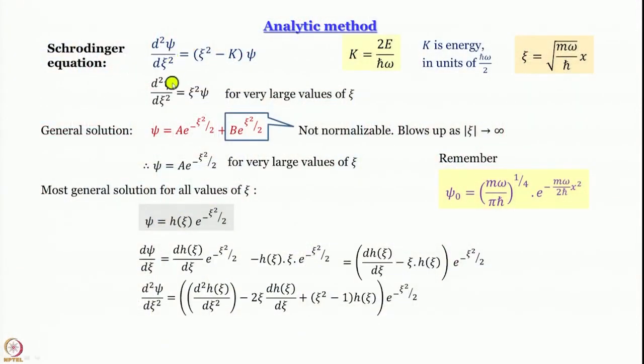In the last module we stopped while discussing the analytic method for obtaining a general expression for the wave function of the harmonic oscillator. We had written the Schrödinger equation in terms of the variable ξ, which is proportional to x and 2E/ħω. The Schrödinger equation became d²ψ/dξ² = ξ² minus k, multiplied by ψ — it is still the Schrödinger equation.